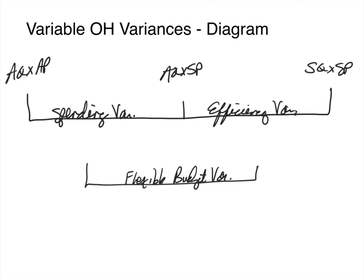Remember, when I say sum — if the two variances have different signs, meaning one is favorable and one is unfavorable, we would get a difference of the two.